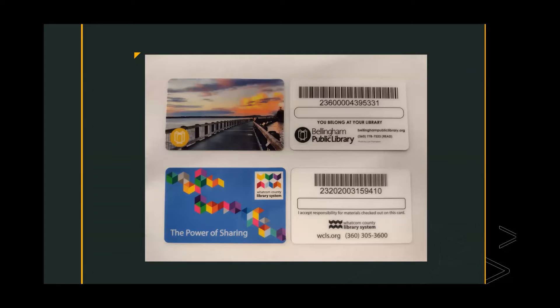This is what the library card might look like. The top card is the Bellingham Public Library, and the bottom card is for the Whatcom County Library System. We are two separate systems but highly collaborative, so if you have either of these cards, you will be able to access our databases.